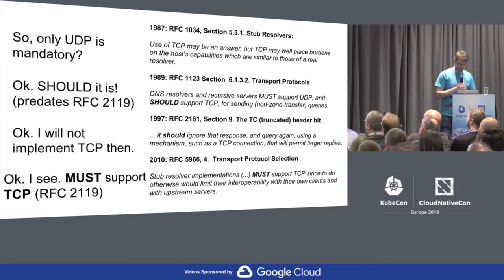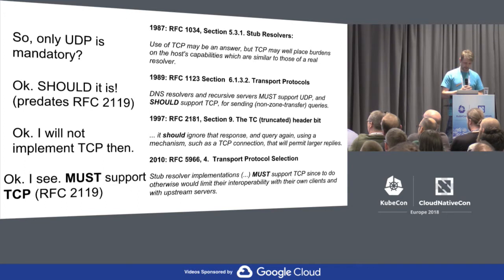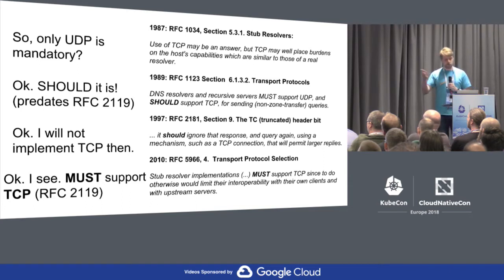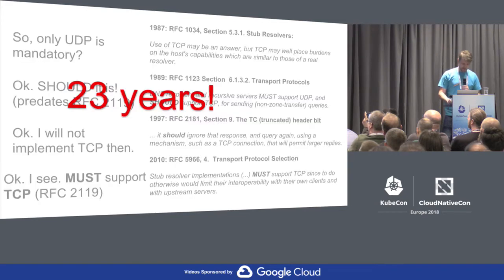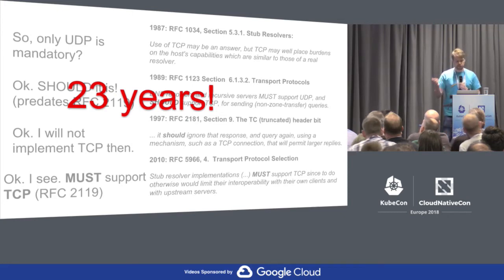More than a decade later, what should you actually do on a truncated bit? You should ignore that response, query again using a mechanism such as a TCP connection that will permit larger replies. And then finally, a couple of years back, stub resolvers must support TCP — since if they don't, interoperability will suffer. So 23 years of ambiguity about whether TCP is actually supported or not, but finally in 2010 we said: yes, if you want to be a stub resolver, you must do TCP as well.